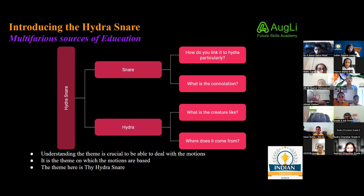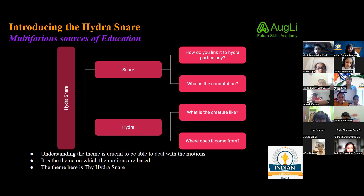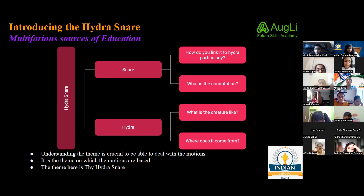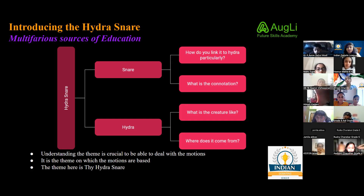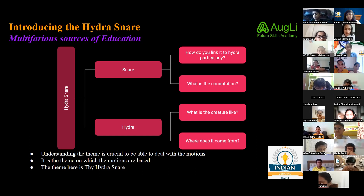The reason you need to understand the different sources of education and the various reasons they're probably not working — the harm of these sources towards students — is that if you understand the main aim of the theme, you'll be able to make better arguments and speeches when you get the topic. Your performance in the tournament is very contingent on understanding the theme, and I'm happy you all understand it.